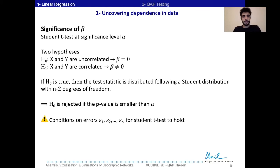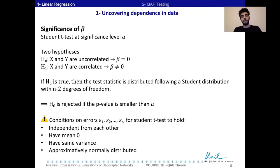But this test cannot be applied under any conditions. Some assumptions about the errors need to be verified. First, the different errors need to be independent from each other. Second, they should have mean zero. Third, they should have the same variance. And they should be approximately normally distributed.